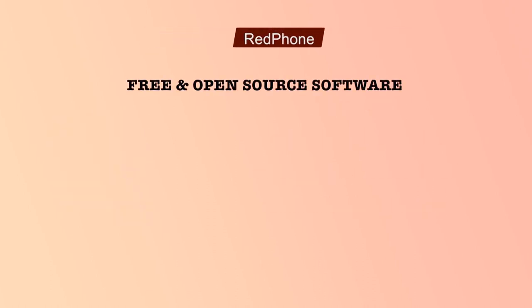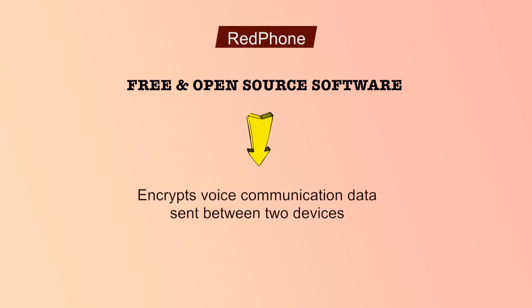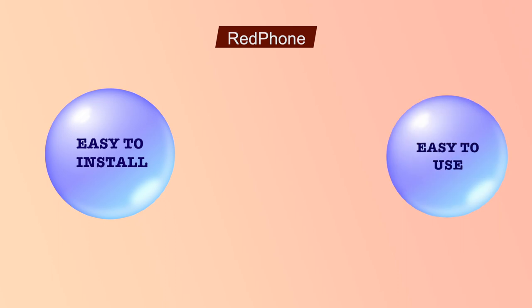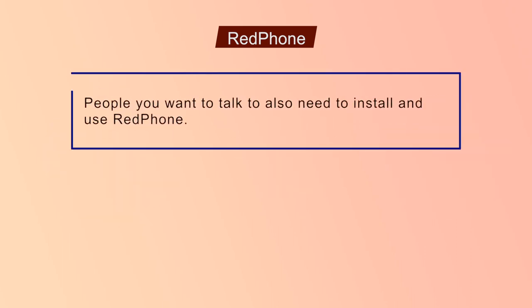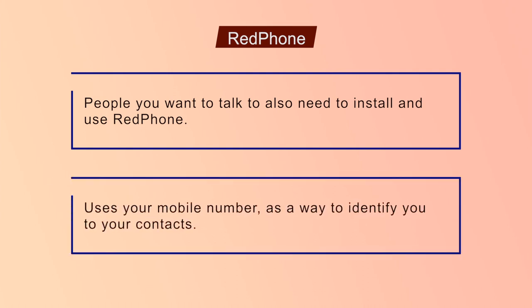Red Phone is a free and open source software application that encrypts voice communication data sent between two devices that run this application. It is easy to install and very easy to use since it integrates itself into your normal dialing and contact scheme. But people you want to talk to also need to install and use Red Phone. For ease of use, Red Phone uses your mobile phone number as a way to identify you to your contacts. Unfortunately, this makes it more difficult to use Red Phone without a functioning mobile service plan, even on devices capable of using Wi-Fi to connect to the internet. Red Phone also uses a central server, which puts the administrators of the service in a powerful position by allowing them to see much of your metadata related to your encrypted VoIP calls.